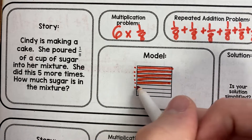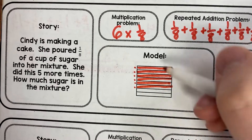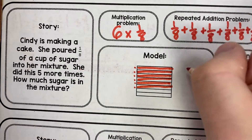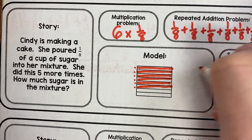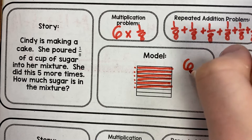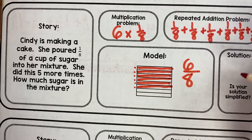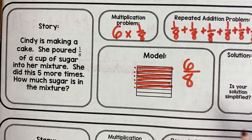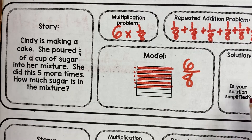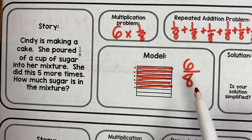That means I need to mark six bars so that I can add one-eighth six times — four, five, six. Now, if I'm looking at my fraction, I see I have six-eighths. The answer, though, needs to be simplified, and I know six-eighths is not simplified yet.